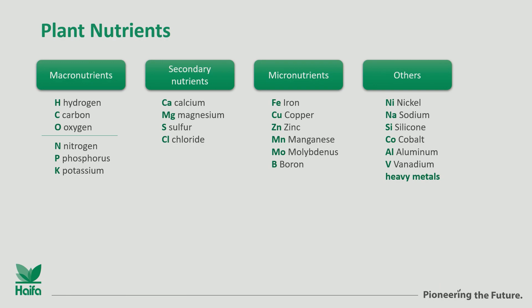Mostly we speak about the NPK, the secondary nutrients, the micronutrients. They are coming from the soil or from the fertilizers. But like hydrogen, carbon or oxygen, we get also other elements that are in the environment, and we need to be aware that these elements exist and can have some influence on the plants.